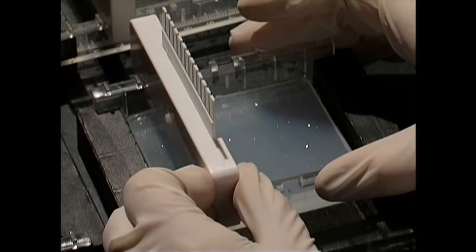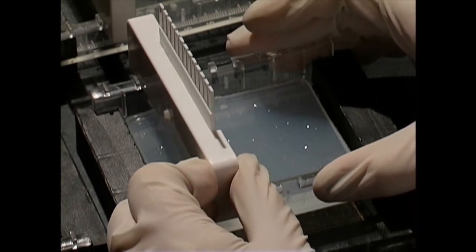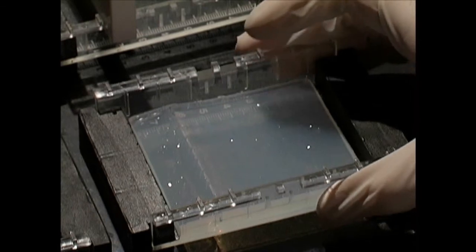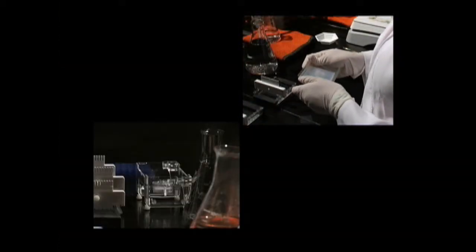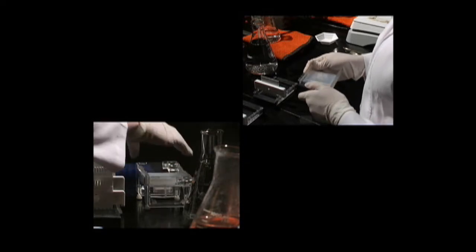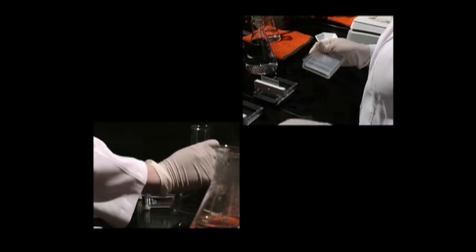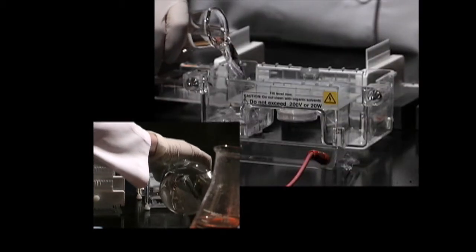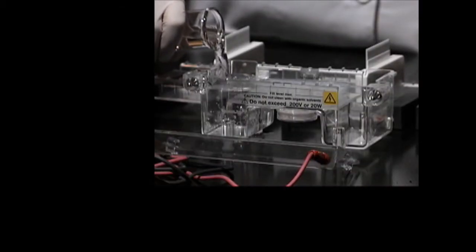It will be firm and cool to the touch. Once the gel is solidified, carefully and slowly remove the rubber dams and comb. Place the gel bed into the electrophoresis chamber, centered and level on the platform. Fill the chamber with diluted buffer. This type of gel is often called a submarine gel because it's submerged under a buffer.